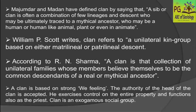William P. Scott said that clan refers to a unilateral kin group based on either matrilineal or patrilineal descent. Unilateral means you trace one side; bilateral means you trace two sides. In a clan, you trace relations from either the mother's side or the father's side — if mother's side, it is matrilineal; if father's side, it is patrilineal. According to Aran Sharma, a clan is that collection of unilateral families whose members believe themselves to be the common descendants of a real or mythical ancestor.